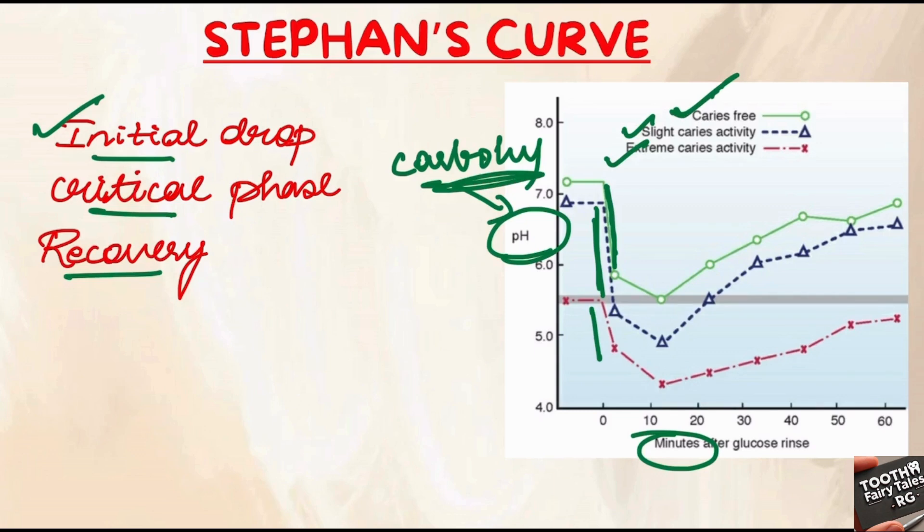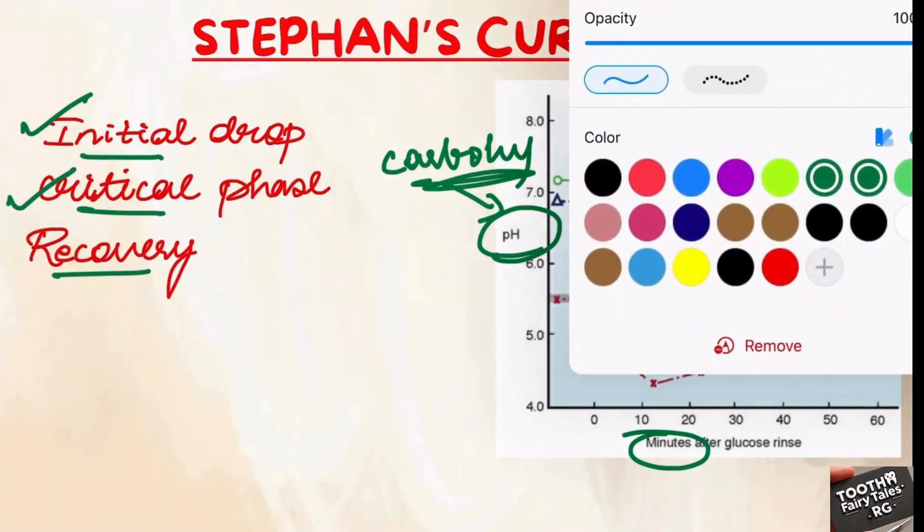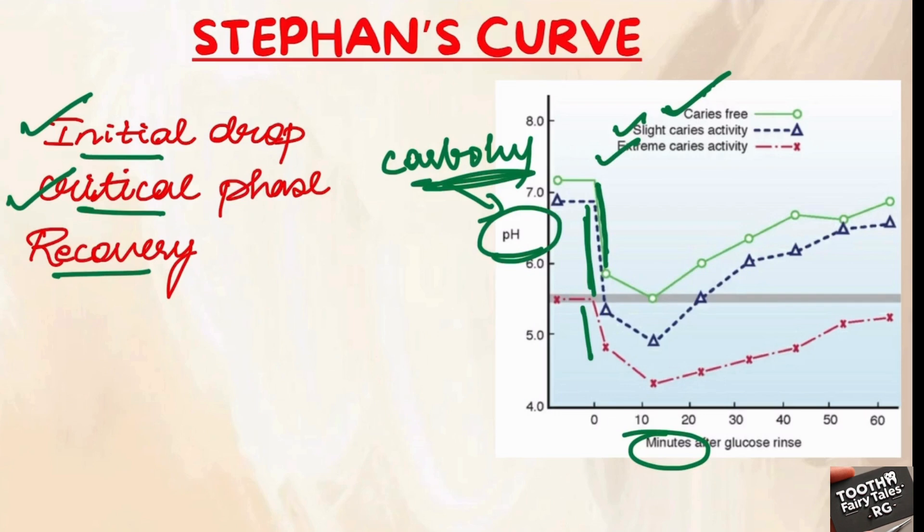The second phase is the critical phase. If the pH drops below 5.5, so this is the mark 5.5, in the slight caries activity and extreme caries activity we see the drop in the pH below 5.5. When this drop happens, the demineralization process begins and our teeth will be at risk for caries.